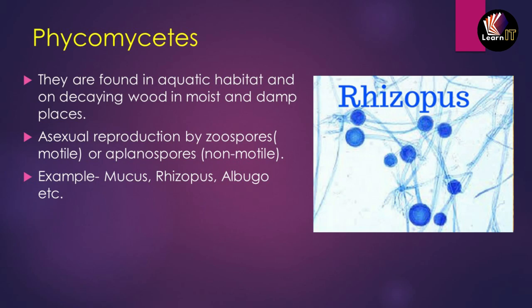Fungi are divided into four parts. The first is Phycomycetes, found in aquatic habitats — living in water and on decaying wood in damp or moist zones. Their mycelium is aseptate and coenocytic. Asexual reproduction is by zoospores (motile) or aplanospores (non-motile). Examples include Mucor, Rhizopus, and Albugo.